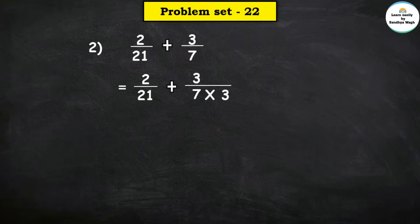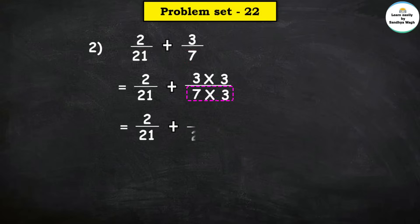Multiply numerator 3 by 3 as well. So numerator: 3 times 3 are 9, and denominator: 7 times 3 are 21. Now both fractions have a common denominator of 21.